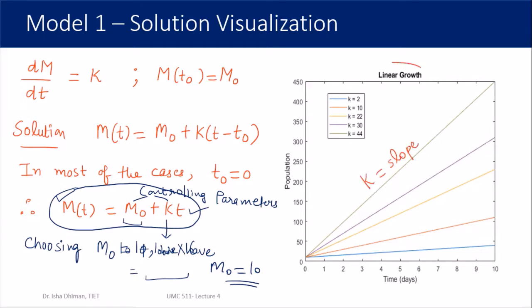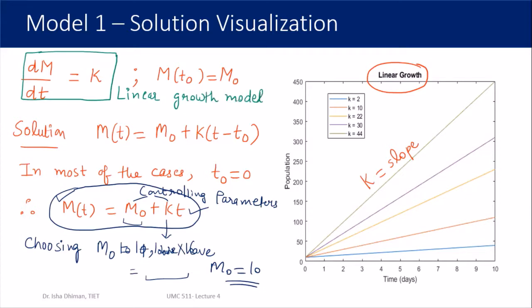The model dM/dt = k is called a linear growth model when k is positive — the quantity increases at a fixed rate. However, if k is negative, it becomes a decay model. So the same model can act as a growth or a decay model depending upon the parameter k. That's the visualization and interpretation of the solution of Model 1.